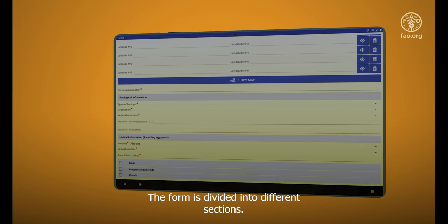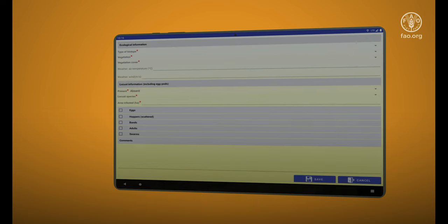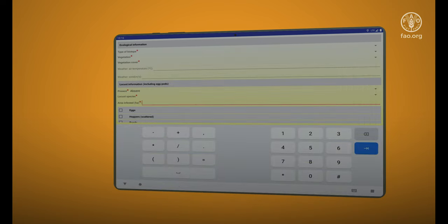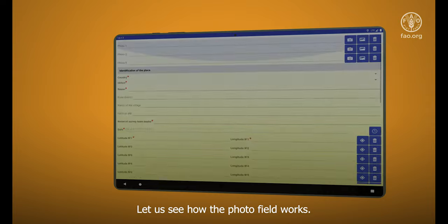The form is divided into different sections. Tap on a field and write or select the necessary information to fill out the form. Let's see how the photo field works.